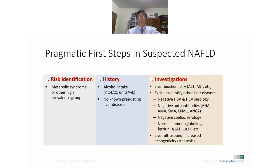There is a programmatic step of risk identification like metabolic syndrome or other high-prevalence groups. Alcohol intake should be less than 14 units per week in females and 21 in males. There should be no known pre-existing liver disease. Investigations include liver biochemistry such as ALT and AST. We must exclude other liver diseases: negative HBV and HCV serology, negative auto-antibodies, negative celiac serology, normal immunoglobulins, and check ferritin, alpha-1 antitrypsin deficiency, copper, etc. Liver ultrasound should reveal increased echogenicity and steatosis.